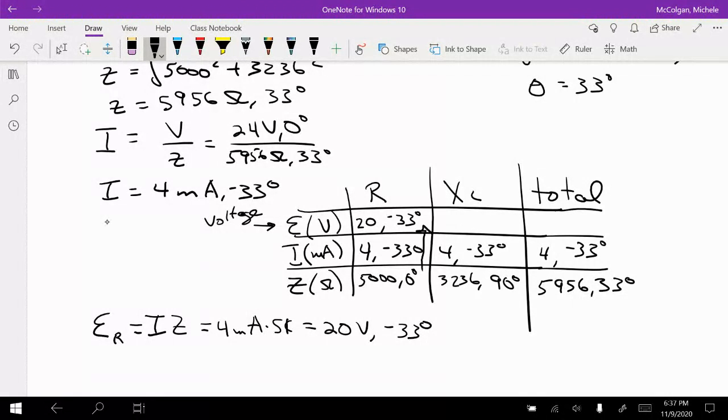I'm going to do the same thing here. I'm going to multiply the Z and the I together to get my E sub L. It's going to be I times Z. And that's going to equal 4 milliamps. So notice here when I did the 4 milliamps times 5k, the milliamps, this was negative 33 degrees, so negative 33 degrees over here. So negative 33 degrees times 3,236 ohms, and this is going to be 90 degrees.